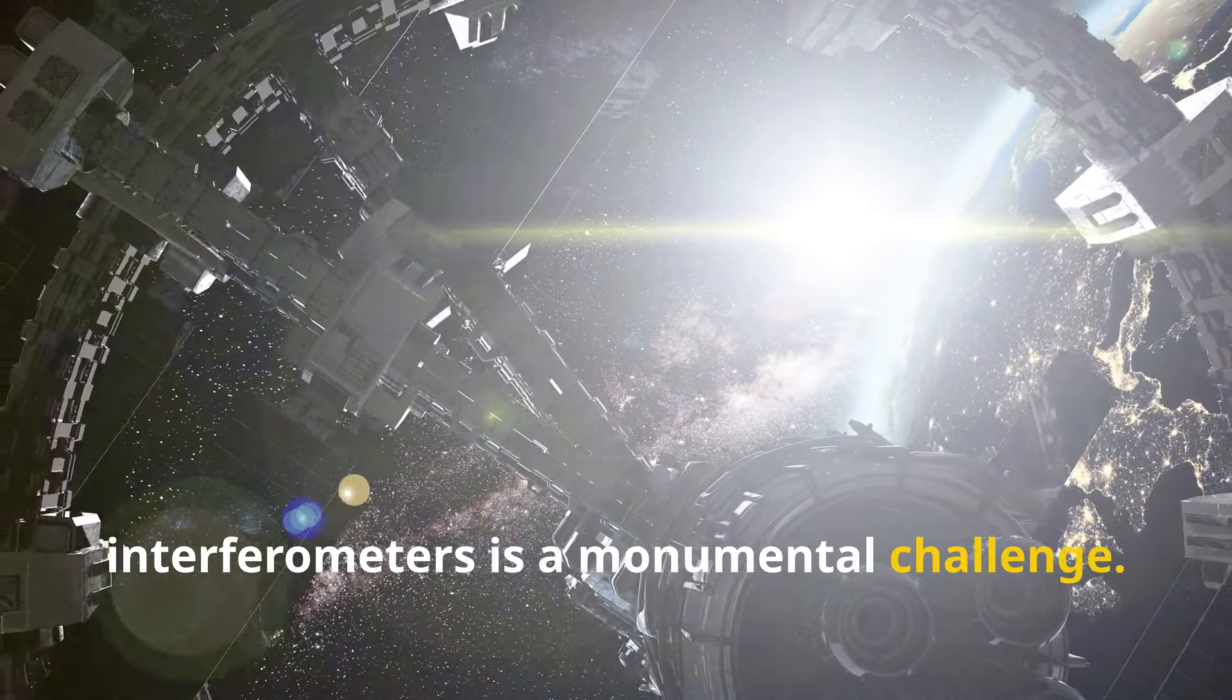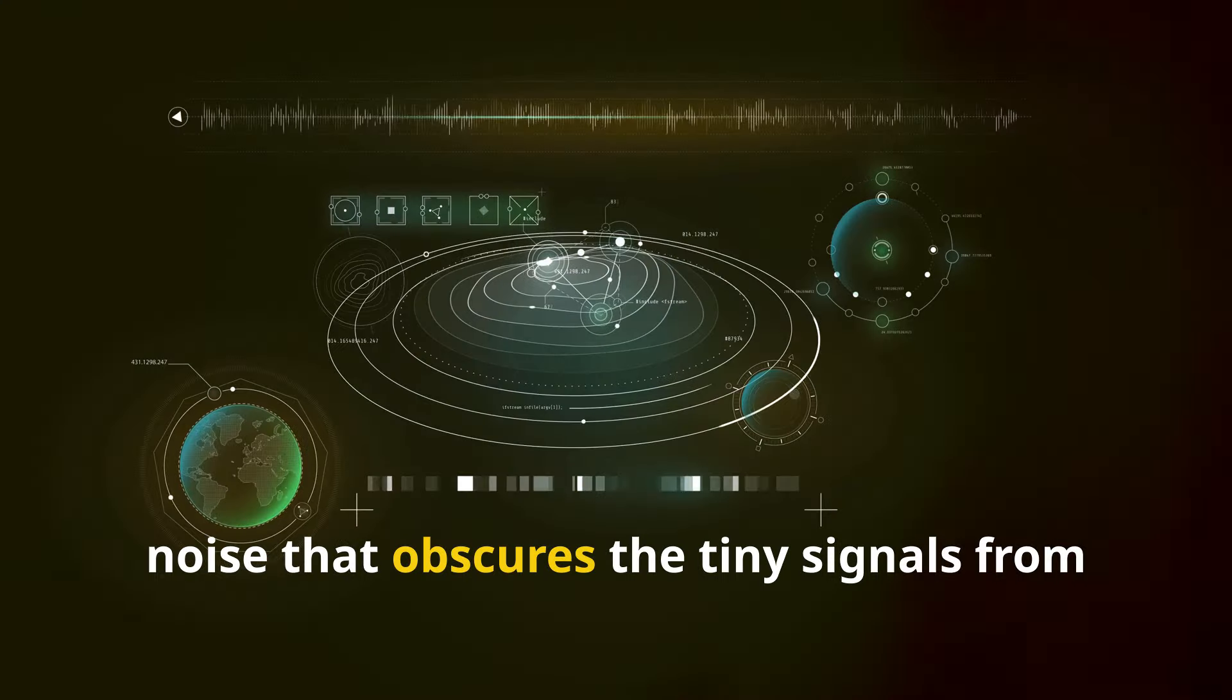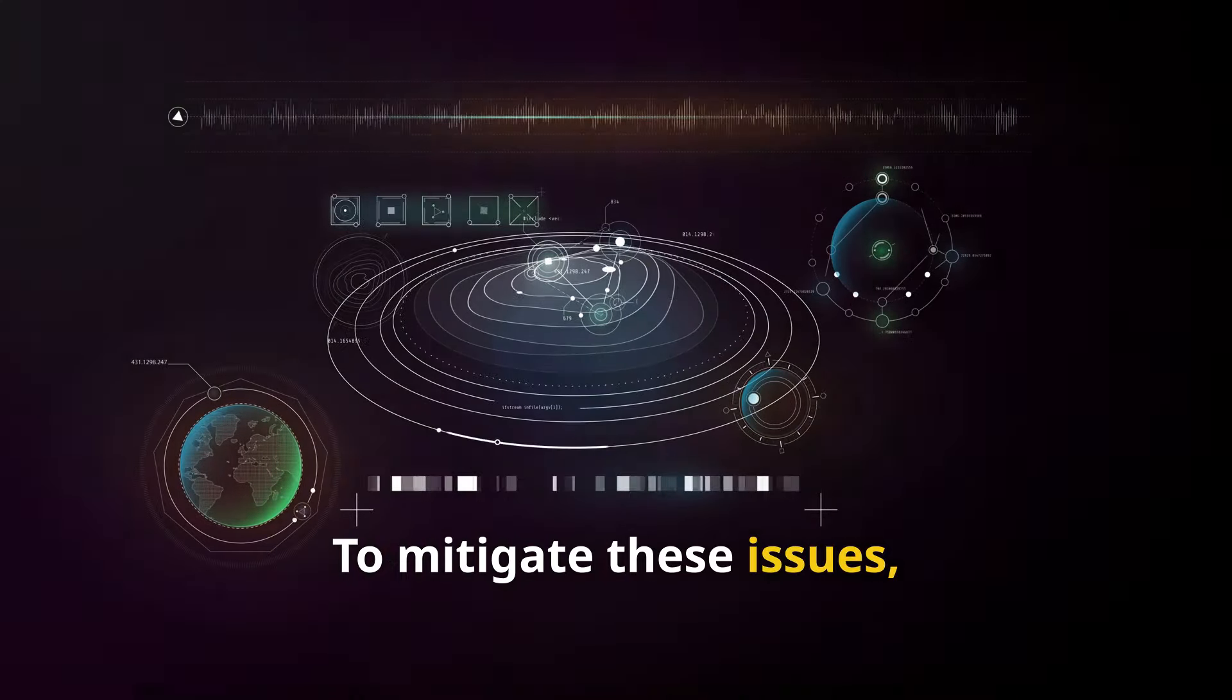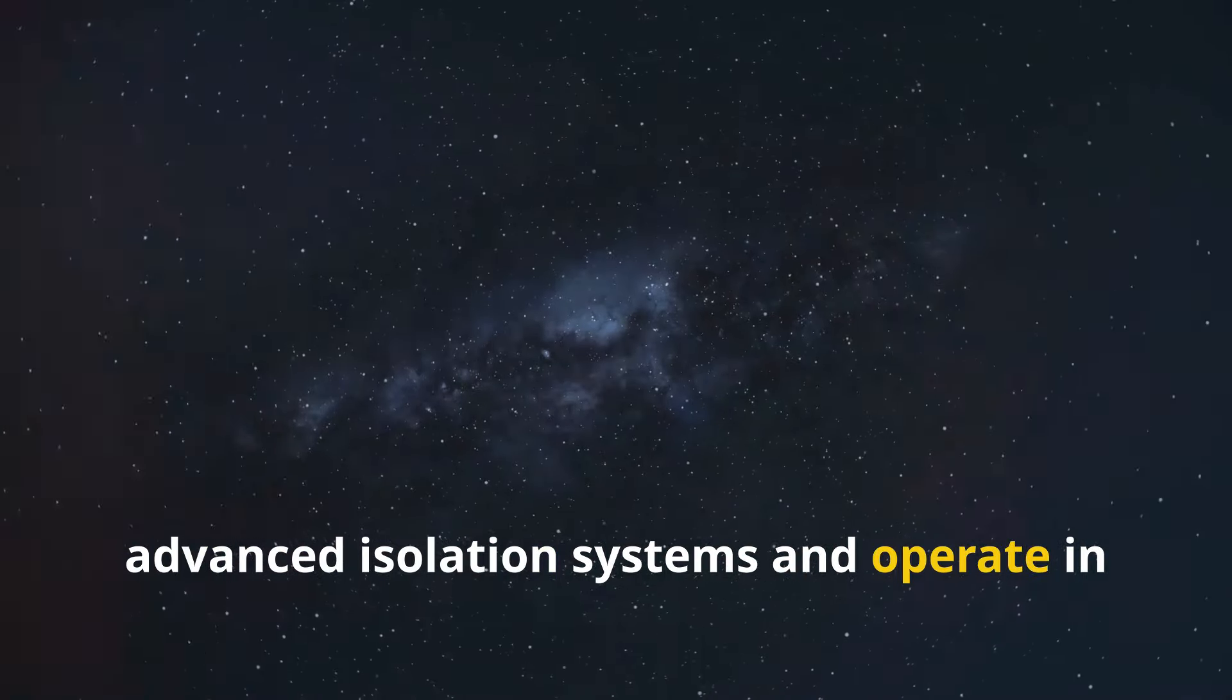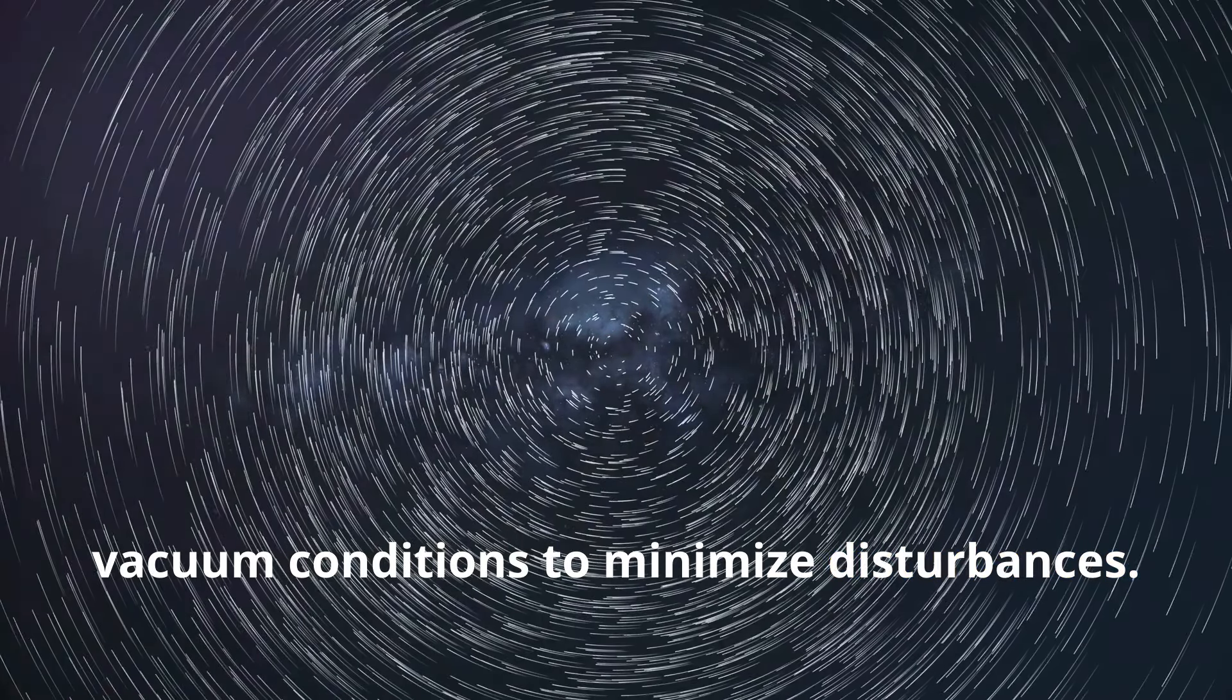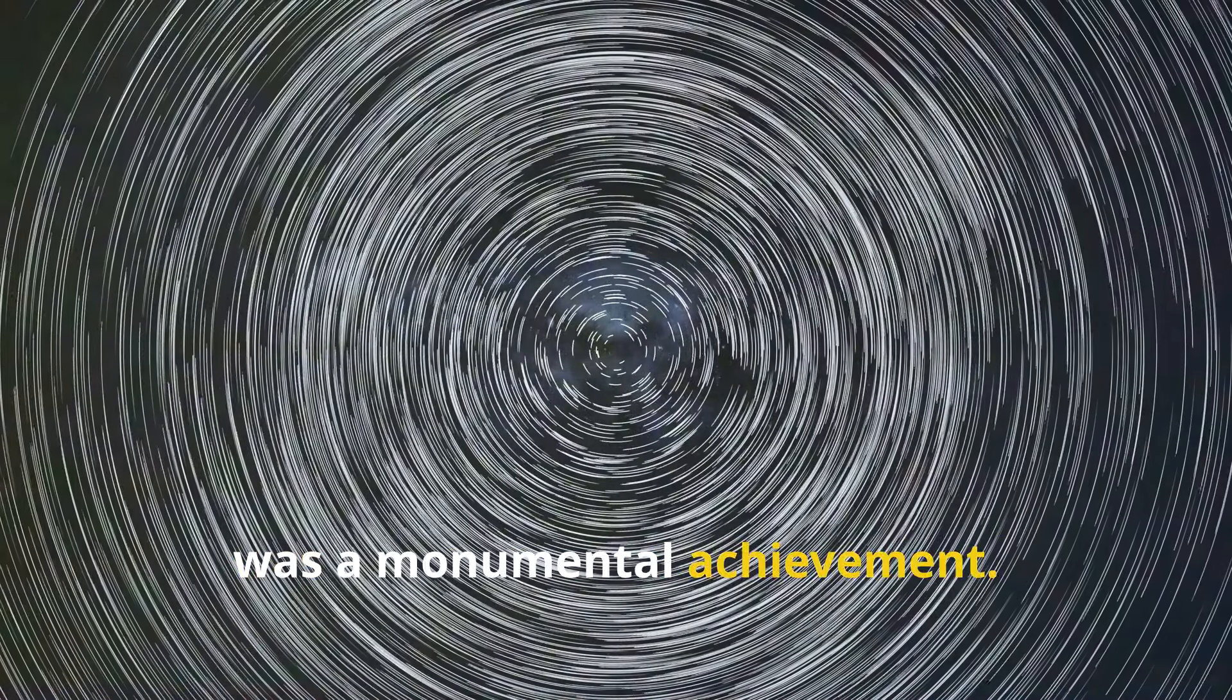Constructing and operating these interferometers is a monumental challenge. Environmental factors such as seismic activity, temperature fluctuations, and even human activity can introduce noise that obscures the tiny signals from gravitational waves. To mitigate these issues, detectors like LIGO are equipped with advanced isolation systems and operate in vacuum conditions to minimize disturbances. The first direct detection of gravitational waves on September 14, 2015 was a monumental achievement.